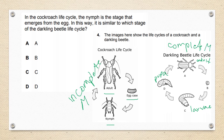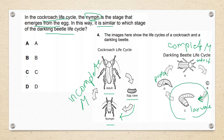Now looking at the question: in the cockroach life cycle, the nymph is the stage that emerges from the egg — so we go from egg to nymph. Which stage of the darkling beetle life cycle is similar? The nymph is the stage right after the egg in the cockroach cycle. Looking at the beetle, what comes after the egg? It's the larva. So the answer is C — the larva.